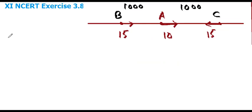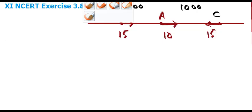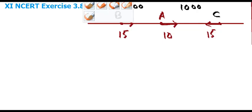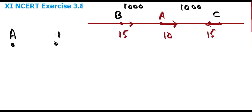Now the question is: when will C meet A? For calculating that, we have to consider only the motion of A and C. So here, this is A, this is B, and this is C, and the distance between A and C is 1000 meters.